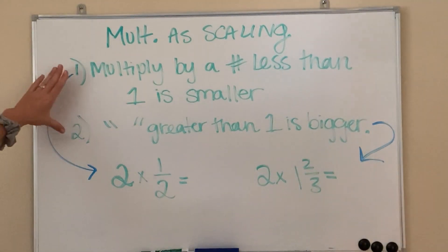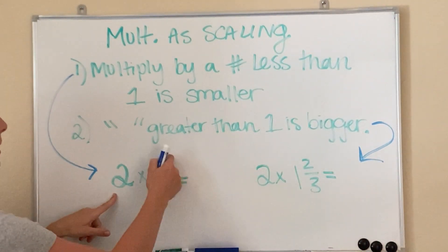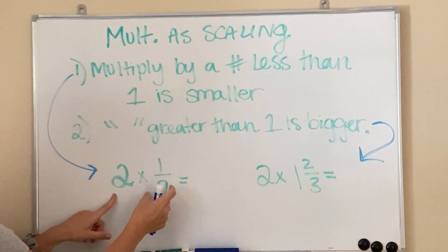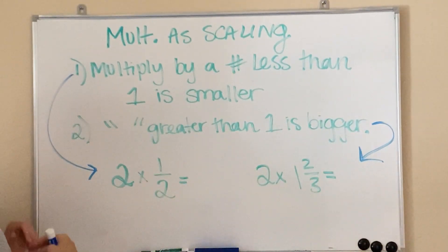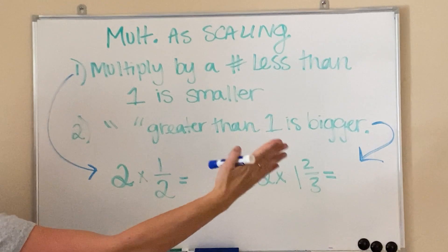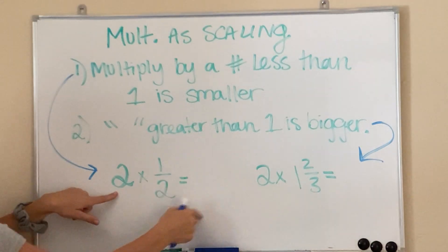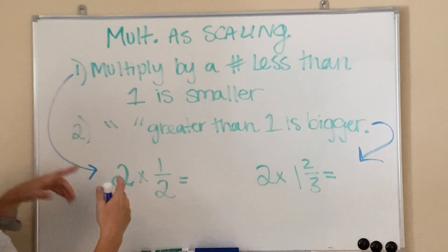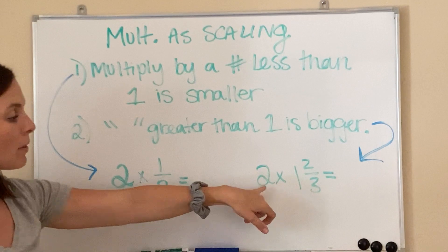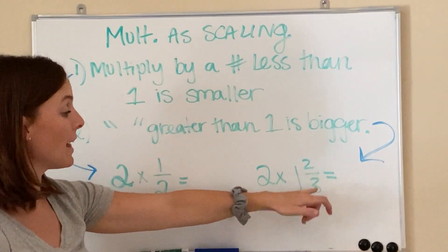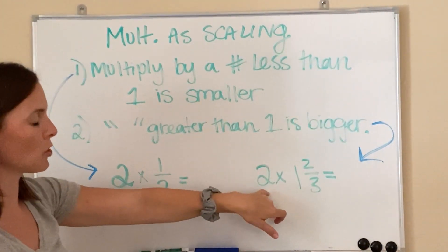Basically, the rules are: if you multiply a whole number by a fraction — a number that's less than one, because isn't a half less than one? A half isn't even one whole yet — anytime you multiply a whole number by anything less than one, your answer is always going to be smaller than that number. The same rule applies but opposite when you multiply by something bigger than one: you'll always get a number bigger than your whole number.